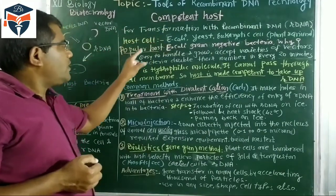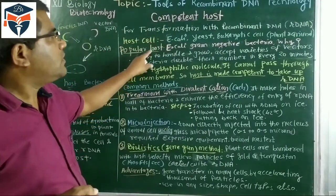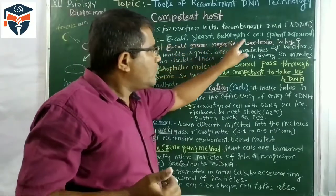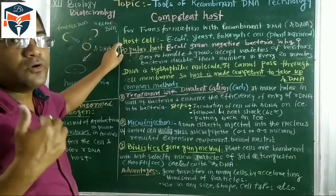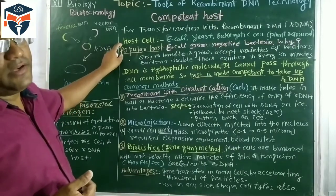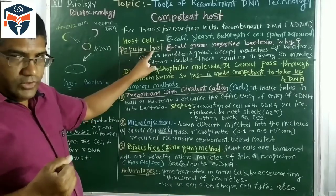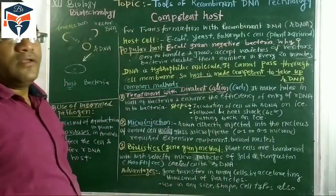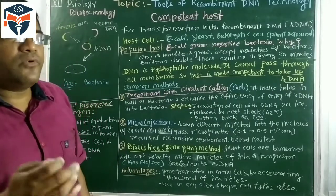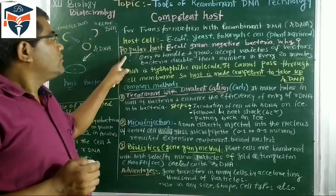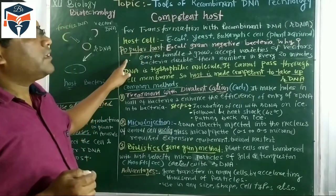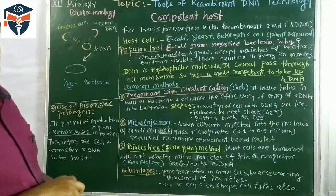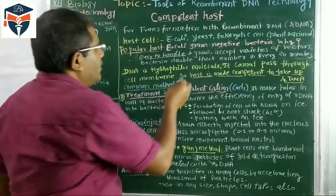Out of all these, the popularly used host in recombinant DNA technology is E. coli, a gram-negative bacteria. Why is E. coli popularly used as a host? First, E. coli is very easy to handle and grow in the laboratory.